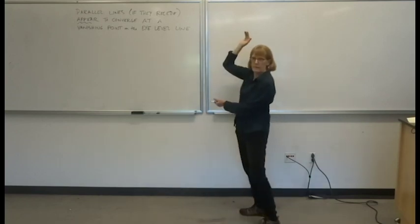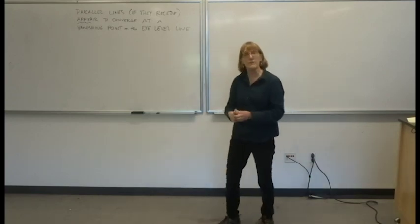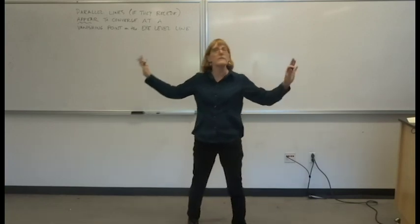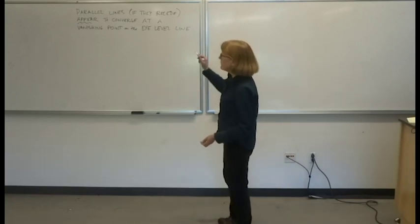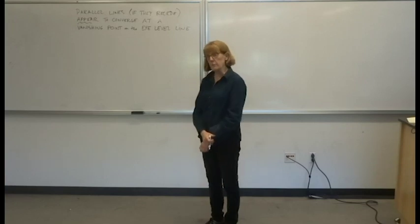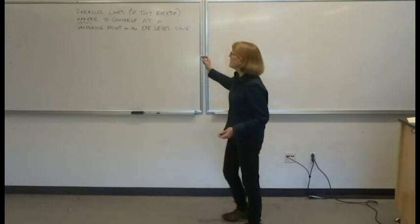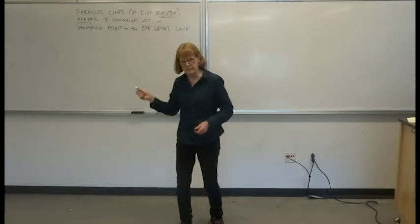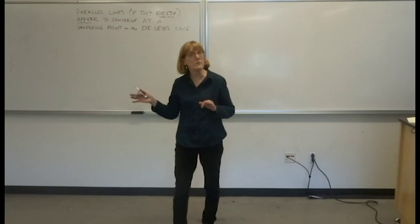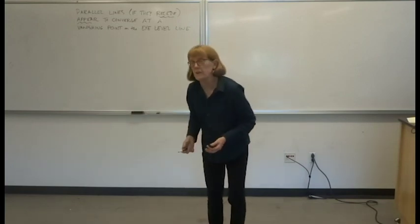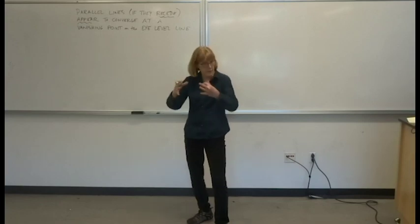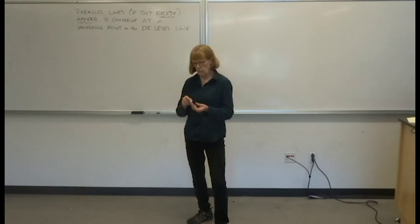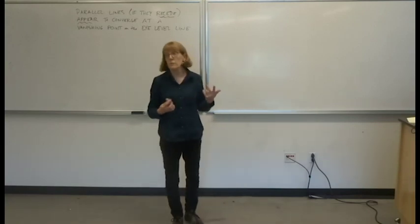The top and bottom of the chalkboard - if they were extended all the way out to the end of the universe, they would remain the same distance apart. That's what parallel means, and so we're saying that they appear to converge. If parallel lines recede from your picture plane, that means they're going to converge at a vanishing point. So to really understand perspective, we need to understand the idea of the picture plane.